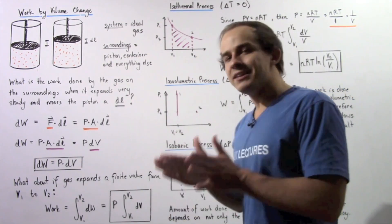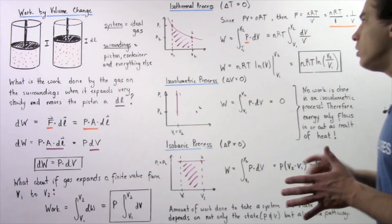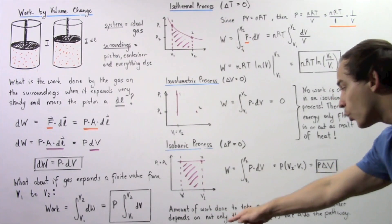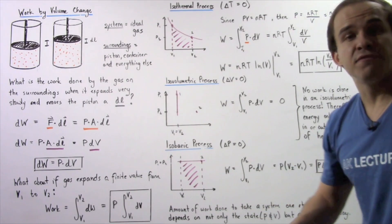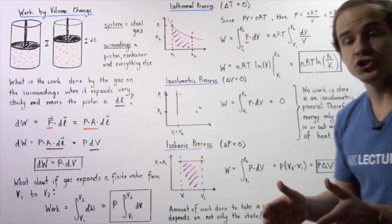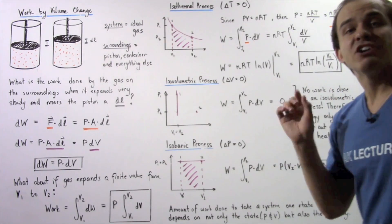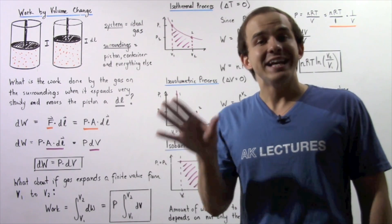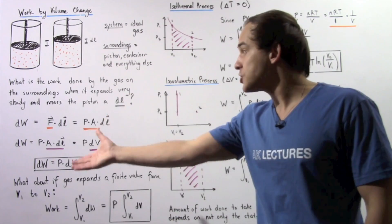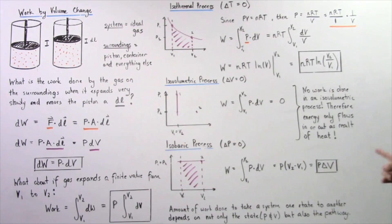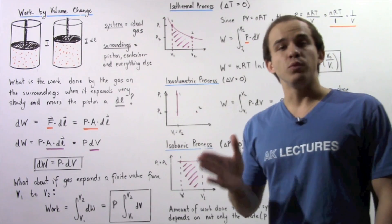In conclusion, the amount of work done to take a system from one state to another does not only depend on the initial and final conditions of pressure and volume, but also on the type of process used — the pathway taken. Each of the three processes yields a different quantity of work.